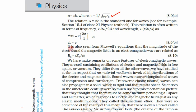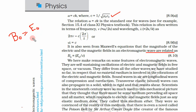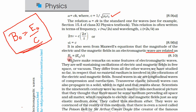Another important thing: it is also seen from Maxwell's equations that the magnitudes of the electric and magnetic fields in an electromagnetic wave are related as B₀ = E₀/c, where c is the speed of light. This is another formula we have to remember, and it also comes from Maxwell's equations.